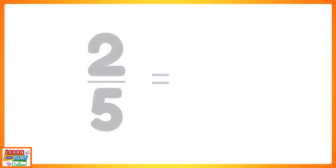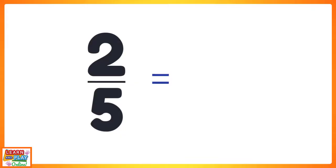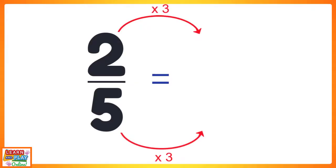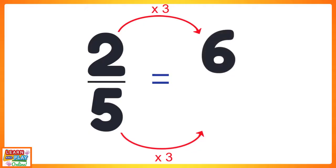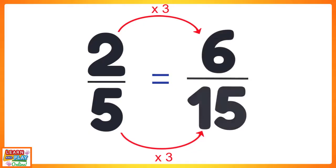Here is a chance for you to try finding an equivalent fraction for two fifths. Multiply this fraction by three to find the equivalent fraction. Feel free to pause the video if you need extra time. Let's see if you got the right answer. Two times three equals six, and five times three equals fifteen. So the equivalent fraction for two fifths is six fifteenths.